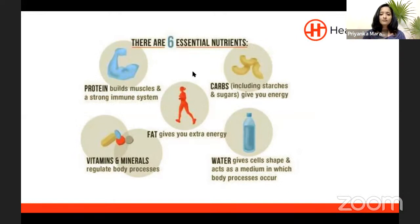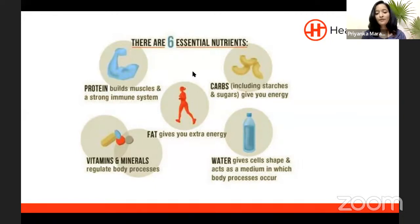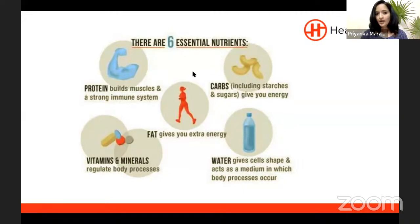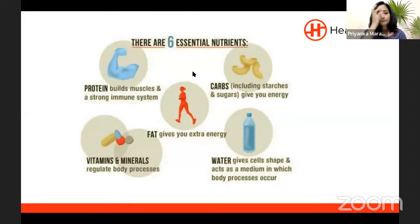Let us understand what carbohydrates are. Carbohydrates are energy-giving foods required for instant energy — like electricity or petrol for a car. The body requires instant energy which comes from carbohydrate in the form of glucose. Examples include rice, wheat, cereals, and some complex carbohydrates from vegetables and pulses.